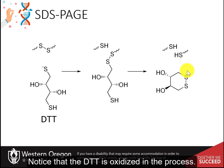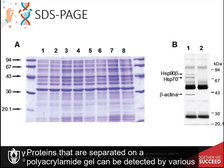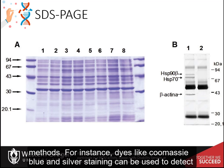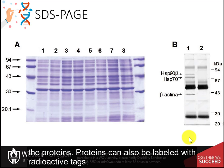Notice that the DTT is oxidized in the process. Proteins separated on a polyacrylamide gel can be detected by various methods — for instance, dyes like Coomassie blue and silver staining can be used to detect the proteins. Proteins can also be labeled with radioactive tags.